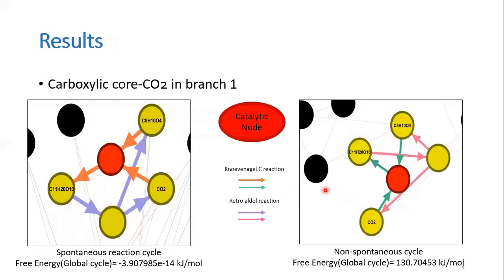And we were able to find CO2 as part of both the return routes in both a spontaneous as well as a non-spontaneous global cycle. Here are the snapshots of CO2 as part of branch 1 in a cycle that is thermodynamically feasible and in one that is not.